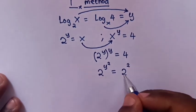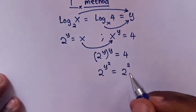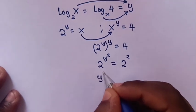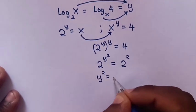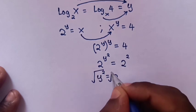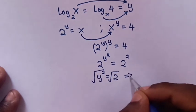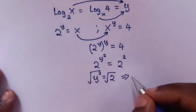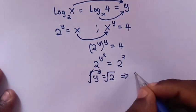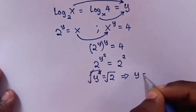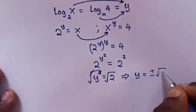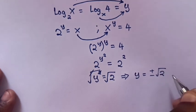Now the bases are the same, so we compare the powers. So y-squared equals 2. Then we apply square root to both sides — the square root cancels with the square — giving y equals plus or minus square root of 2.